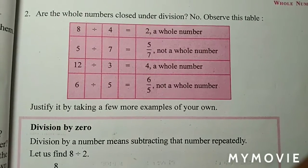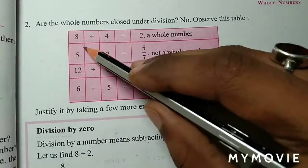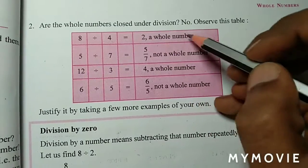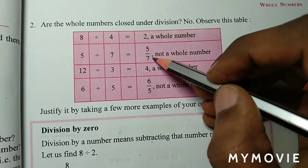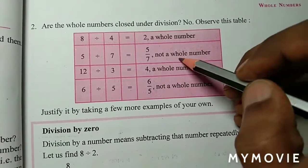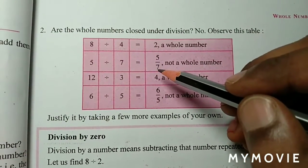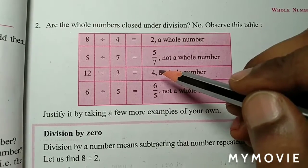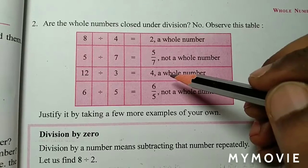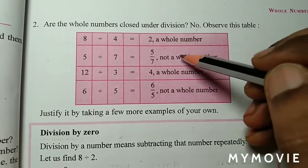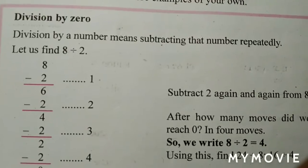अभी हम देखेंगे कि whole numbers division की time में close होते हैं के नहीं। जब division करते हैं बड़े number से छोटा number: 8 divided by 4 is equal to 2, जो whole number है। लेकिन जब छोटे number को बड़े number से divide करते हैं तो fraction आ जाता है, जो whole number नहीं होता। So whole numbers are not closed under division.